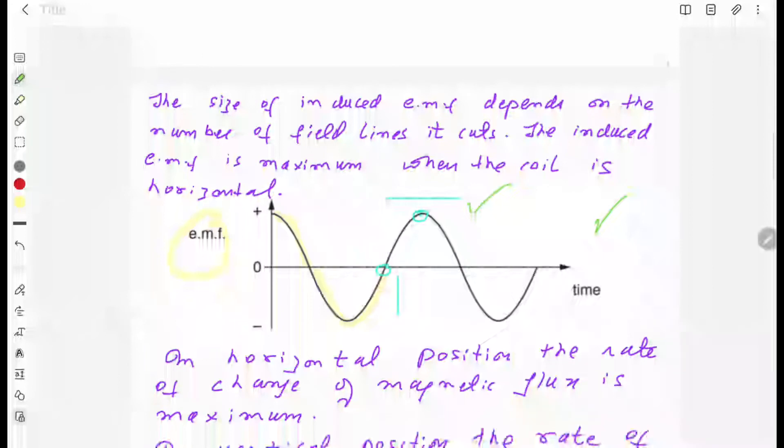In vertical position, the magnetic field lines cut are zero. There is no magnetic field lines cut in vertical position. So you can see this zero EMF over here.